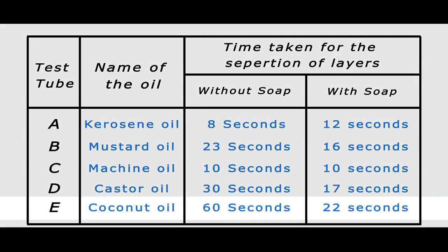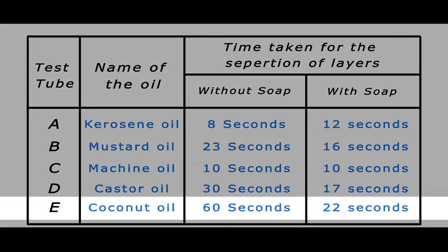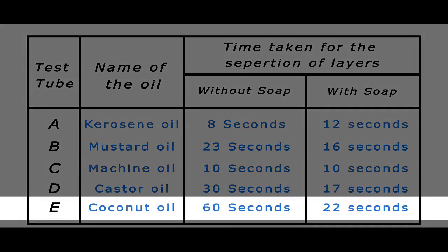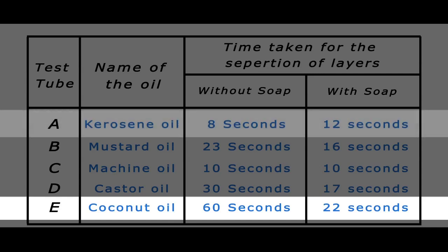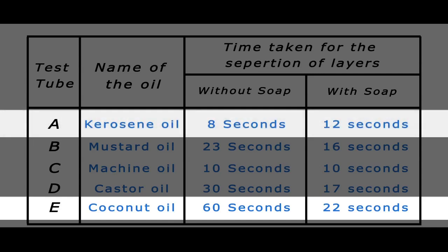From the observation table, it is clear that coconut oil takes the longest time to get separated from its emulsion, and kerosene oil takes the minimum time.